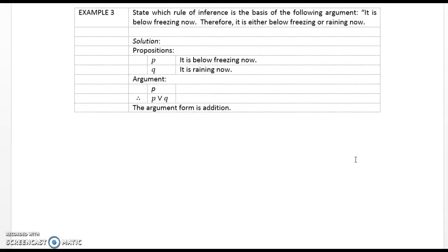Example 3. State which rule of inference is the basis of the following argument: 'It is below freezing now, therefore it is either below freezing or raining now.' Propositions: P is 'it is below freezing now,' Q is 'it is raining now.' Argument: P, therefore P or Q. The argument form is addition.